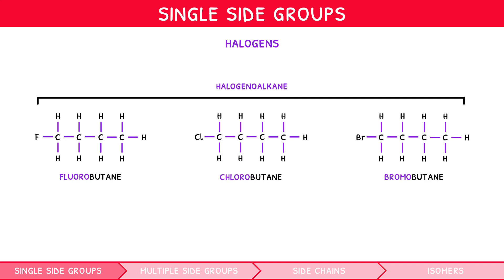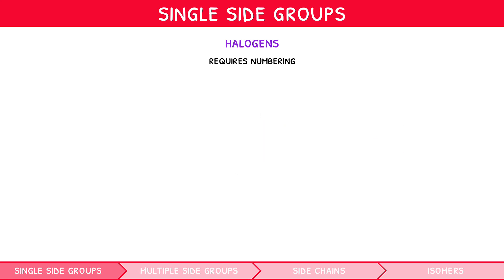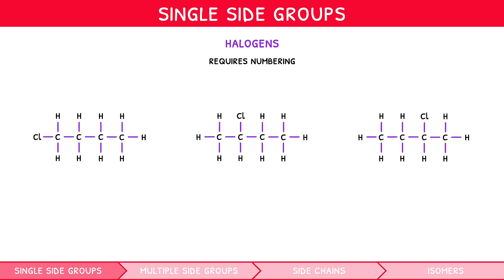However, as with the functional groups with alkenes and alcohols, a side group should be numbered to indicate the carbon on which it is found, adding this number before the name of the group. The number is determined by numbering the carbon chain in sequence, starting at the end closest to the side group. Let's consider three versions of chlorobutane, positioning the chlorine group on sequential carbons. We previously called the left structure chlorobutane, which, although correct, is incomplete. A more correct name would be 1-chlorobutane. The middle structure would therefore be named 2-chlorobutane. Spotting the symmetry, you should catch that the final structure would also be named 2-chlorobutane.